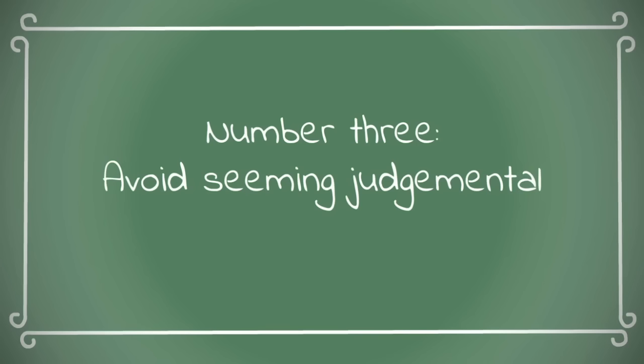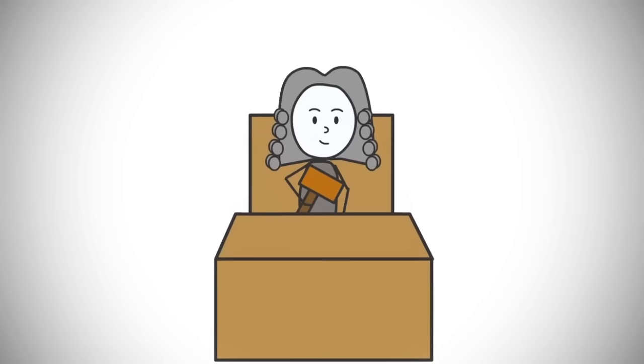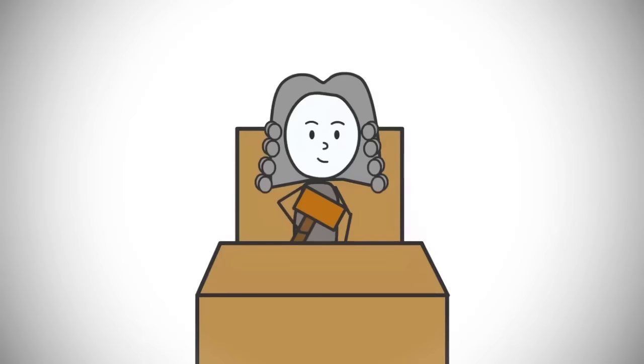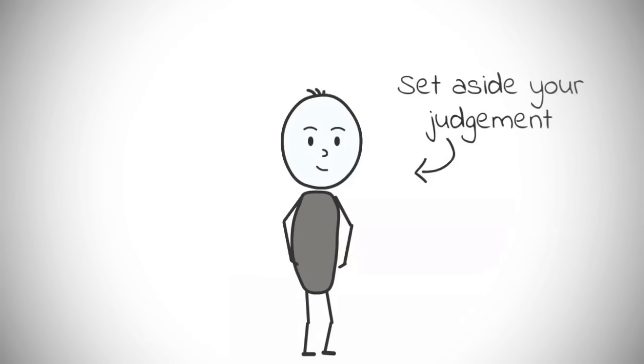Number three, avoid seeming judgmental. In order to communicate effectively with someone, you don't have to like them or agree with their ideas, values or opinions. However, you do need to set aside your judgment and withhold blame and criticism in order to fully understand a person.